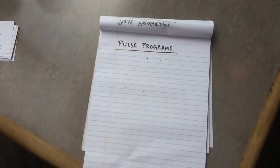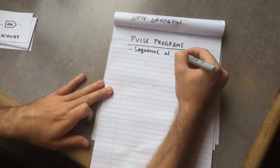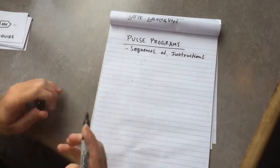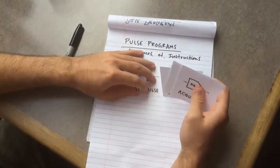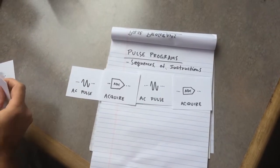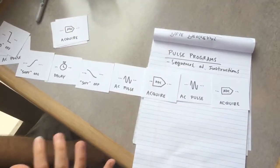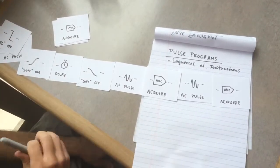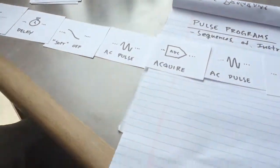The answer to that flexibility is called pulse programming. Pulse programs are just sequences of instructions, and they're executed on the fly by the Pi PPM. At the end of the day, we want to acquire data, but before that, maybe we'll add an AC pulse. We can extend this as much as we want flexibly on the Pi PPM by simply adding more and more instructions. This is a much more flexible way of going about taking data from the Pi PPM.